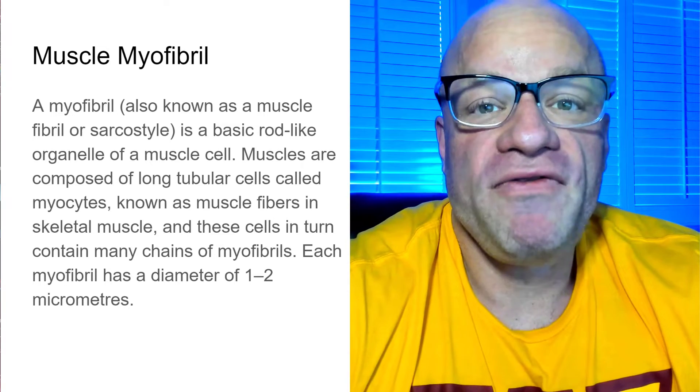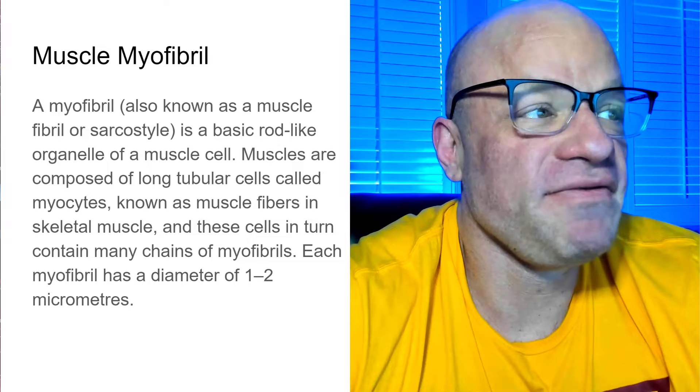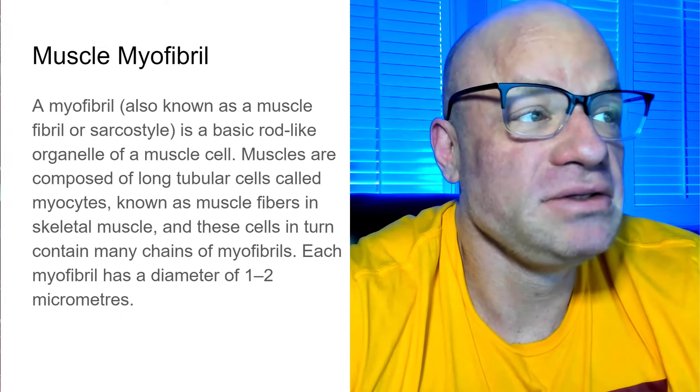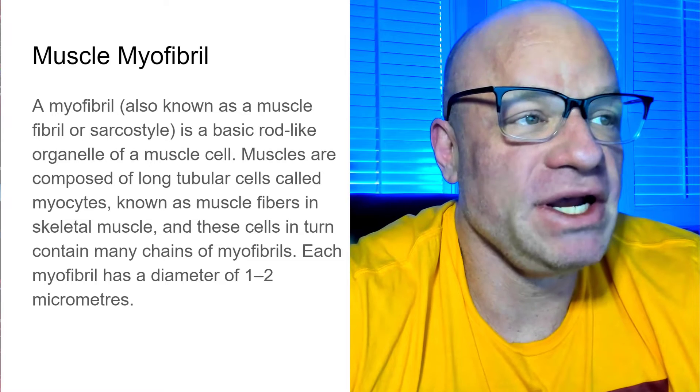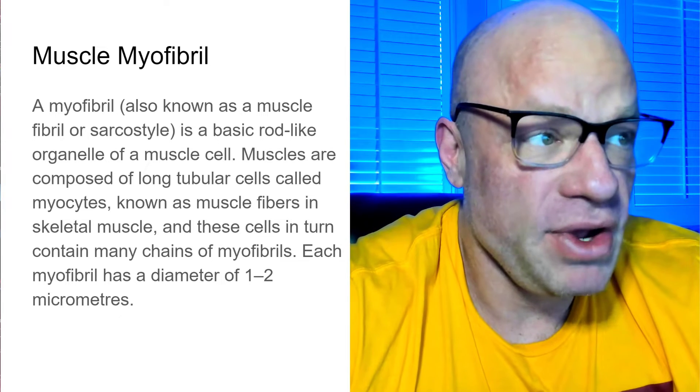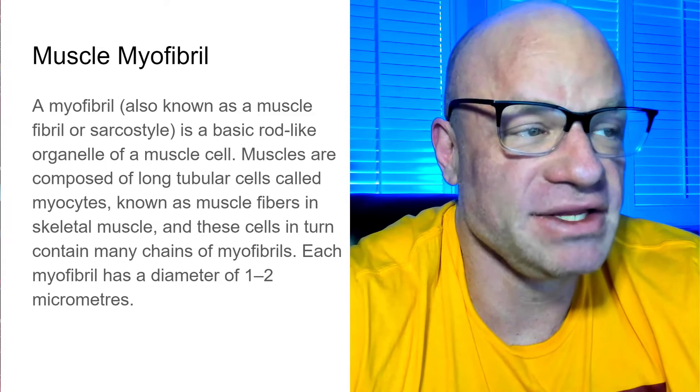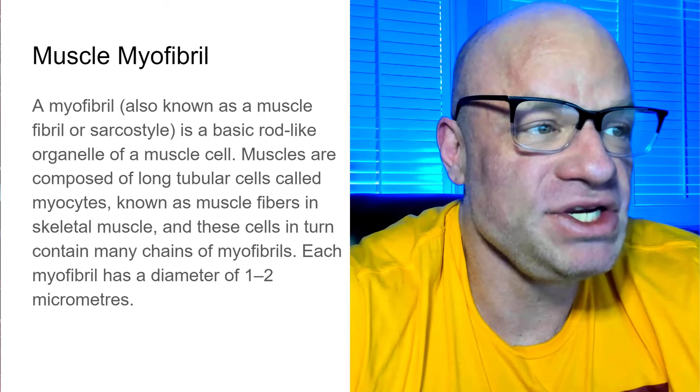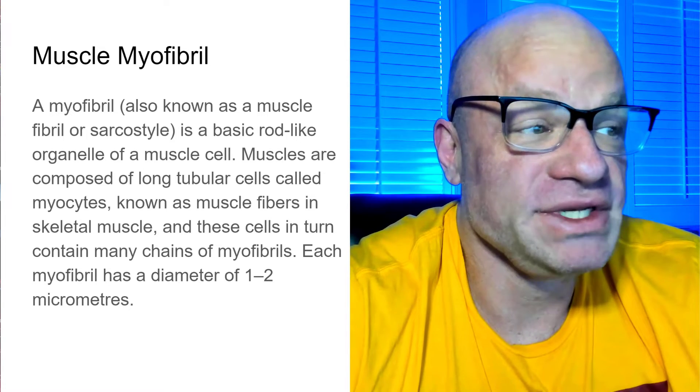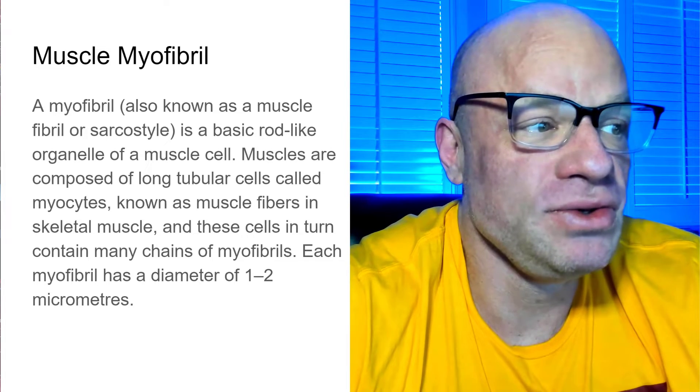The muscle myofibril, also known as the fibril or sarcostyle, is a basic rod-like organelle of the muscle cell. Muscles are composed of long tubular cells called myocytes, known as muscle fibers in skeletal muscle. And these cells, in turn, contain many chains of myofibrils. Each myofibril has a diameter of 1 to 2 micrometers.